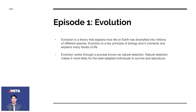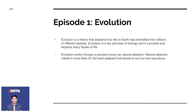Evolution works through a mechanism called natural selection. Natural selection means that the best adapted individuals survive and reproduce in any given environment.